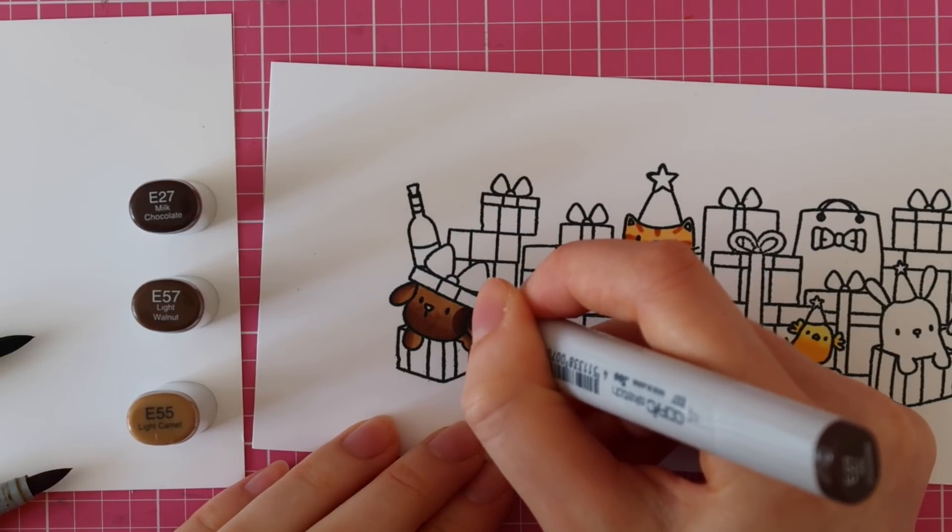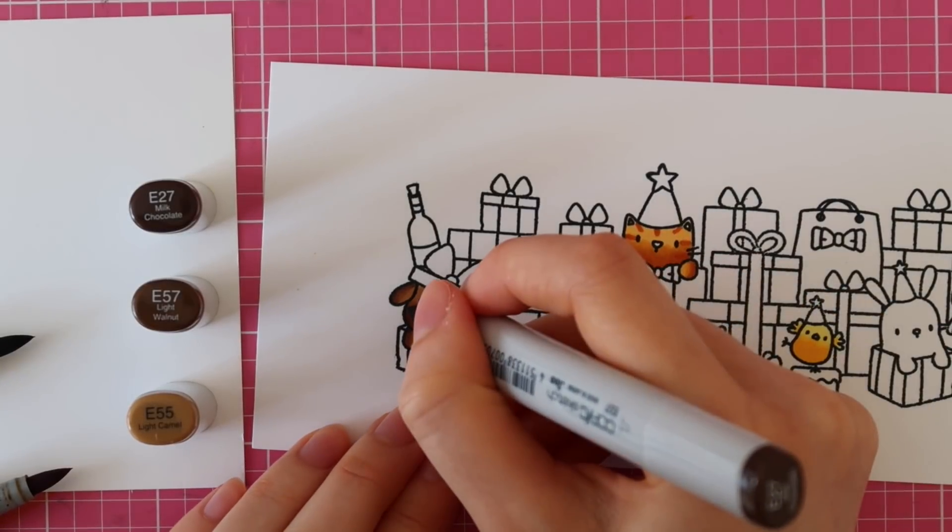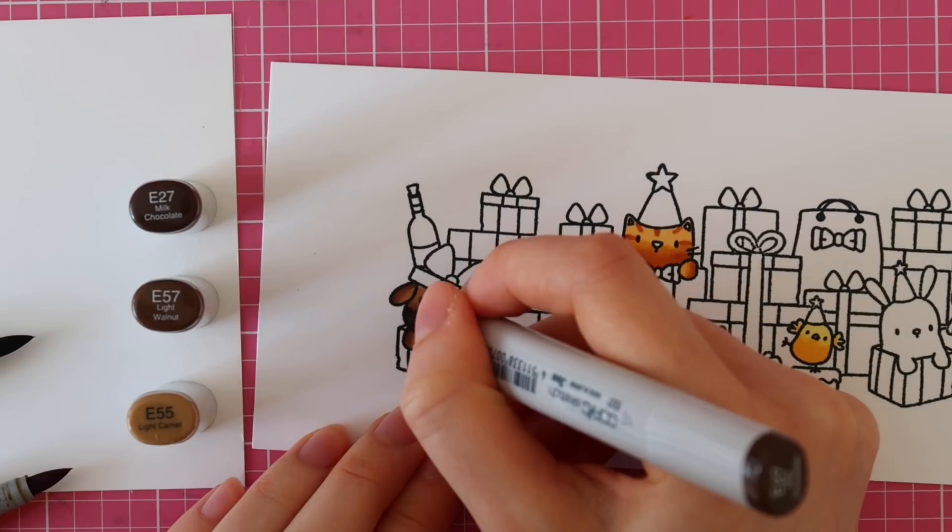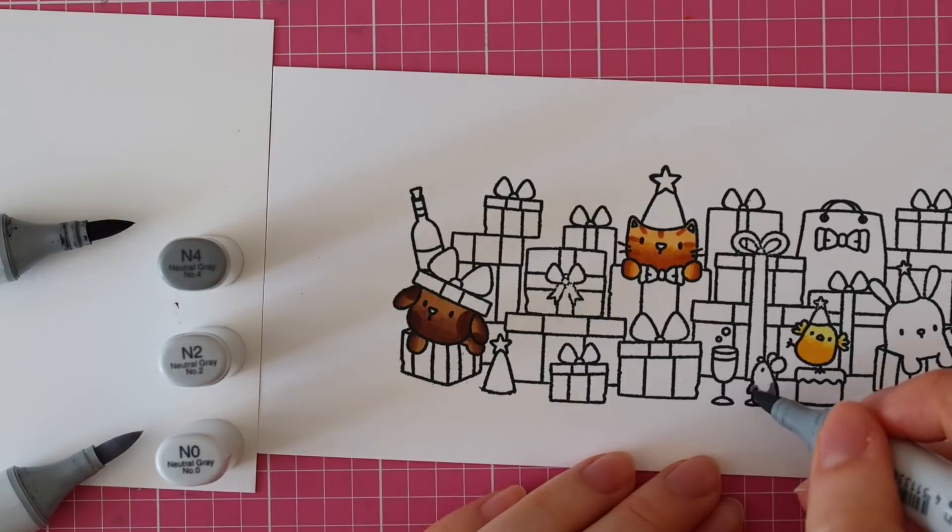And just like I did with the cat, I'm going to go back in with that darkest color just to add a little bit of details. So for the dog, I added some spots. And then for the cat, I added some stripes.